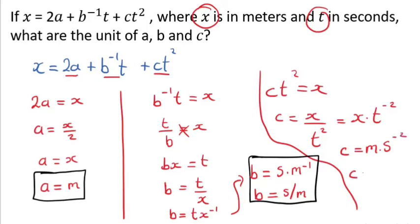Alternatively, you can write it as meters per second squared. So for c as well, you can write any of these two. Any of the two are okay. So there we have it, these are the units for a, for b, and as well as for c. Thank you very much.